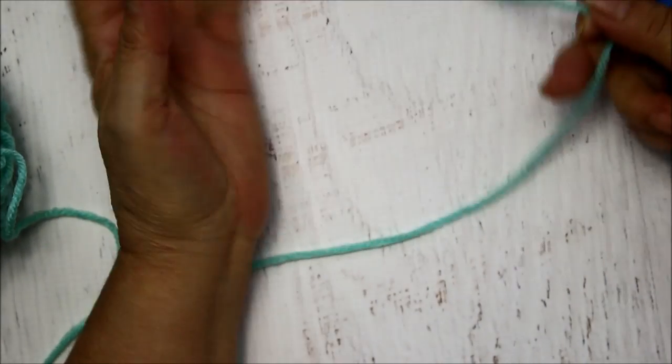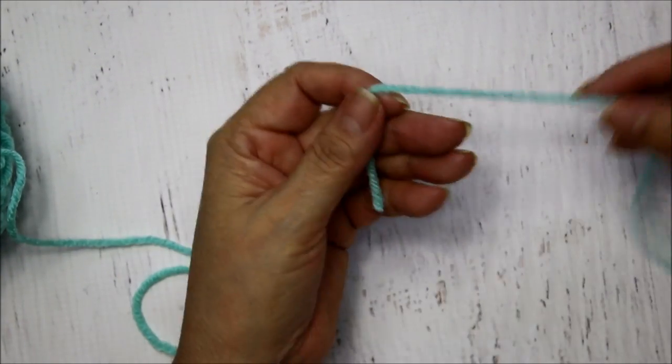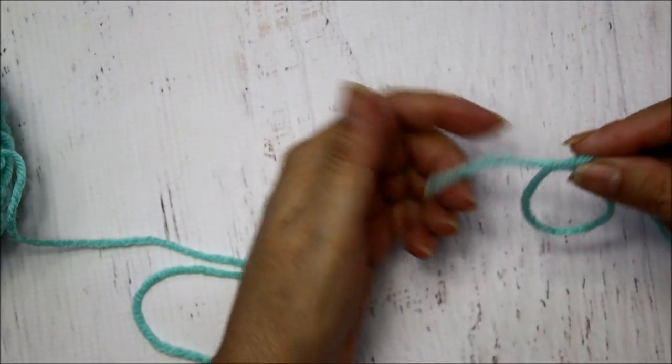So we're going to be working on number 45 which is this cute little flower. So if you get a chance to purchase that book I would go ahead and do it because it's really a good book. So here to begin I'm going to start with the lighter color. And I'm going to start with the magic circle.